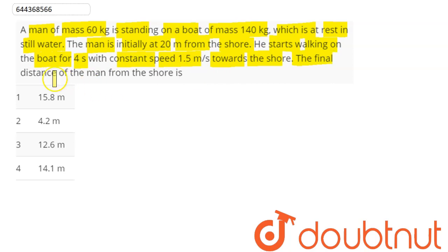Towards the shore, the final distance of the man from the shore is. So suppose this is the shore and here the man is on a boat. This man is at a distance given here as 20 meters from this shore, so this distance here is given to be 20 meters.